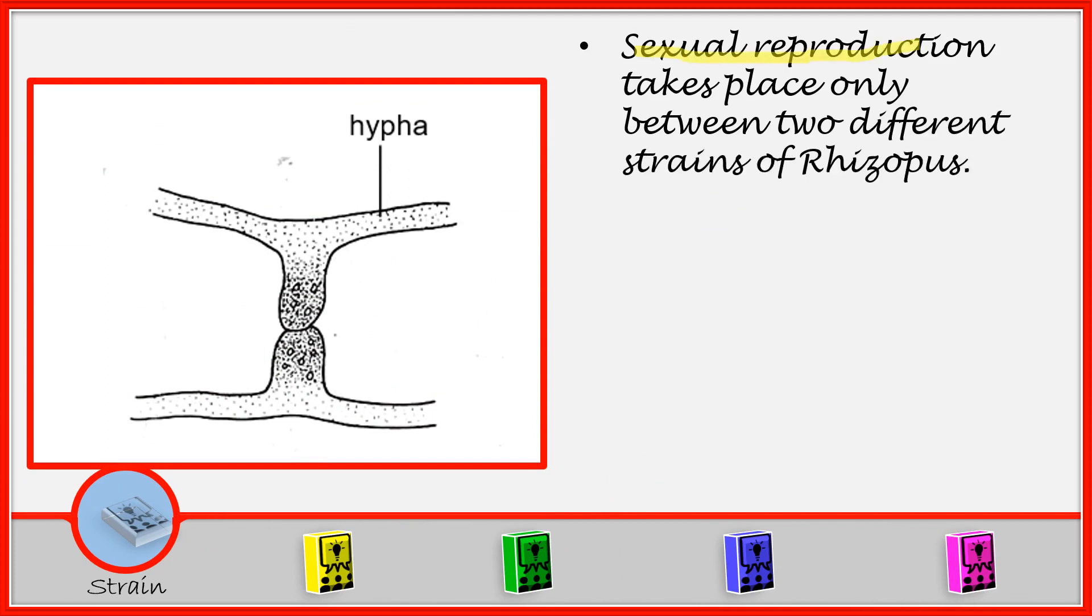Sexual reproduction takes place between two different strains of Rhizopus. So here we have two different strains of hyphae which come and align alongside each other. Then after that, they will send out a protuberance and this protuberance will meet. And when they meet, then we say sexual reproduction is taking place.